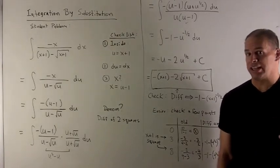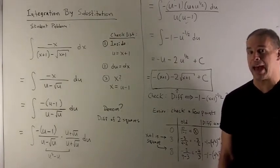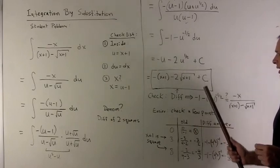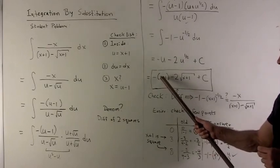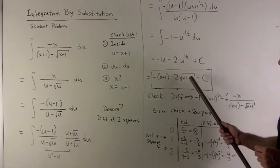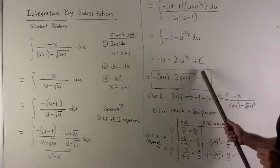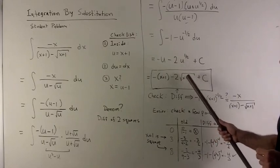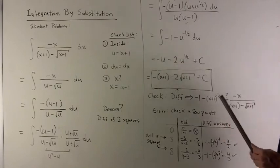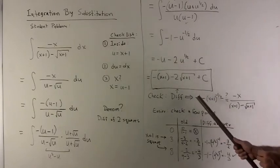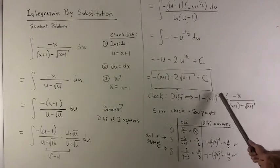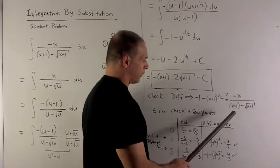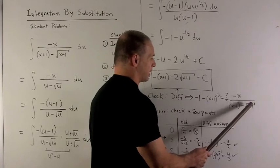Typically, we check the answer by differentiating it and hope we get the original thing back. Differentiating: the derivative of minus x plus 1 is minus 1. For the second term, this is x plus 1 to the one-half power, so by the chain rule, one-half hits the 2 and becomes 1, giving x plus 1 to the one-half minus 1, which is minus one-half. So we get minus 1 minus x plus 1 to the minus one-half. We're asking: is this equal to minus x over x plus 1 minus square root of x plus 1?